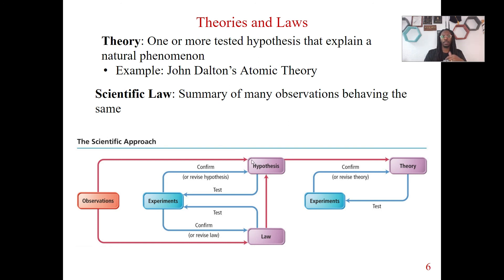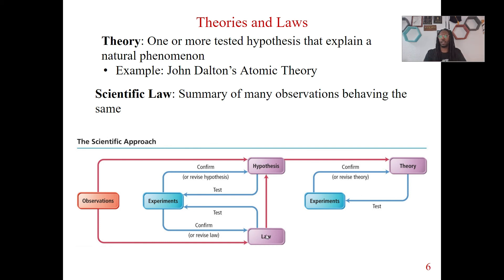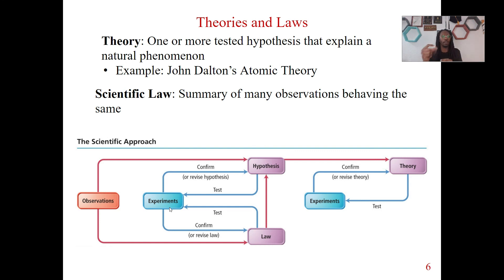We can observe something, have a hypothesis about it, test it with experiments, confirm it, make a theory about it, and then test that theory. We can also, if we don't have an explanation but we know what keeps happening over and over again, it could just become a law. We then test that law, come up with a hypothesis, test that theory, and do the same thing all over again. This is the scientific approach. If you observe something, the same thing keeps happening over and over again, that could eventually lead to experiments leading to a law. This is how we look at theories and laws with the scientific method.